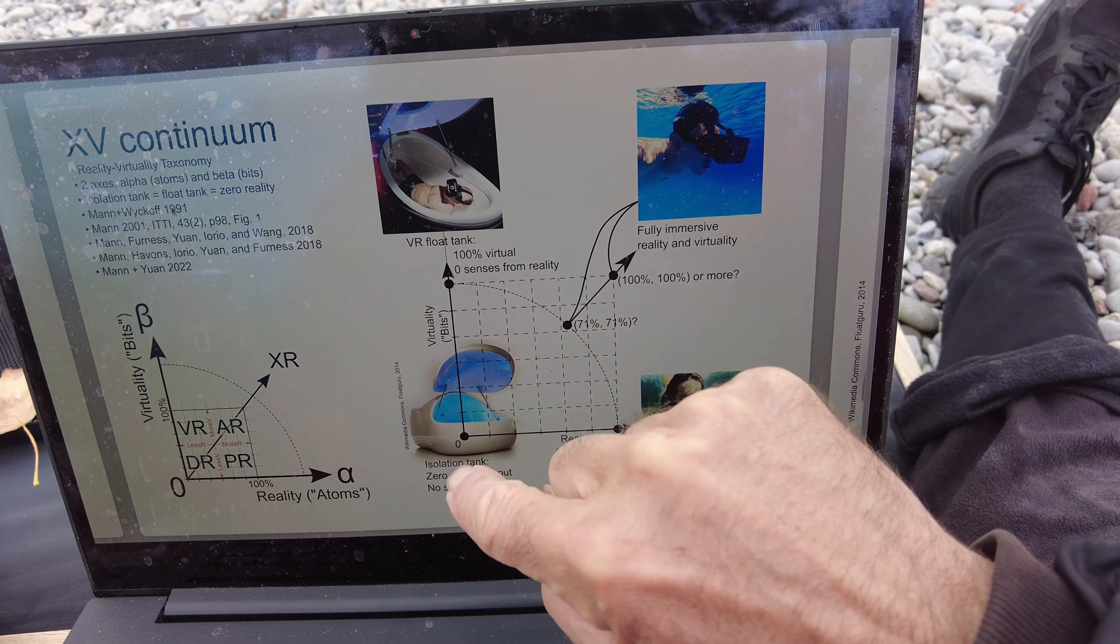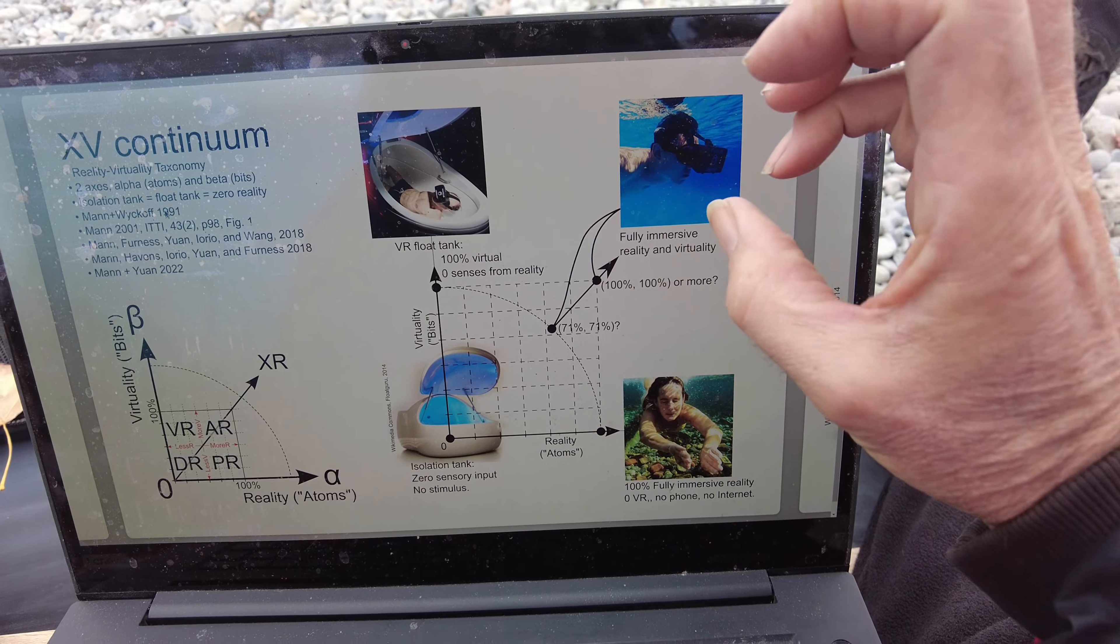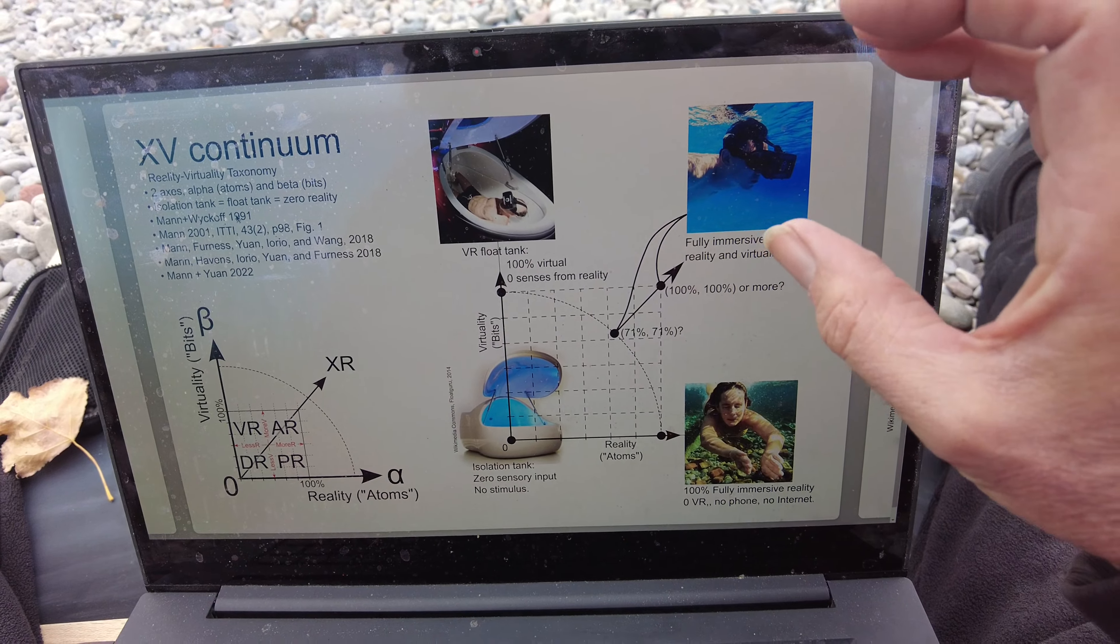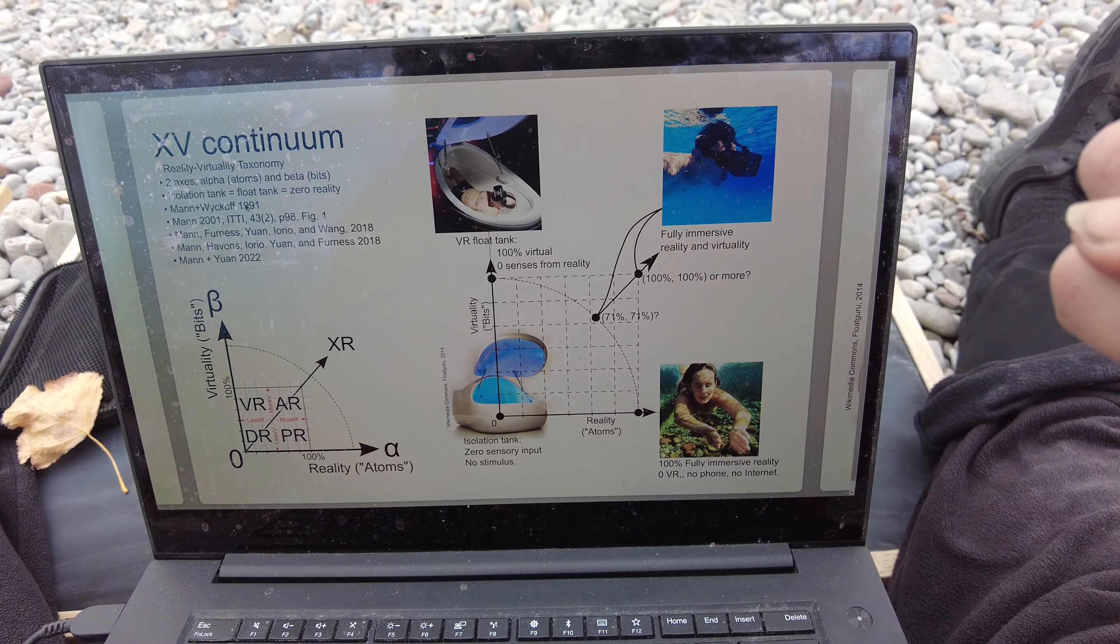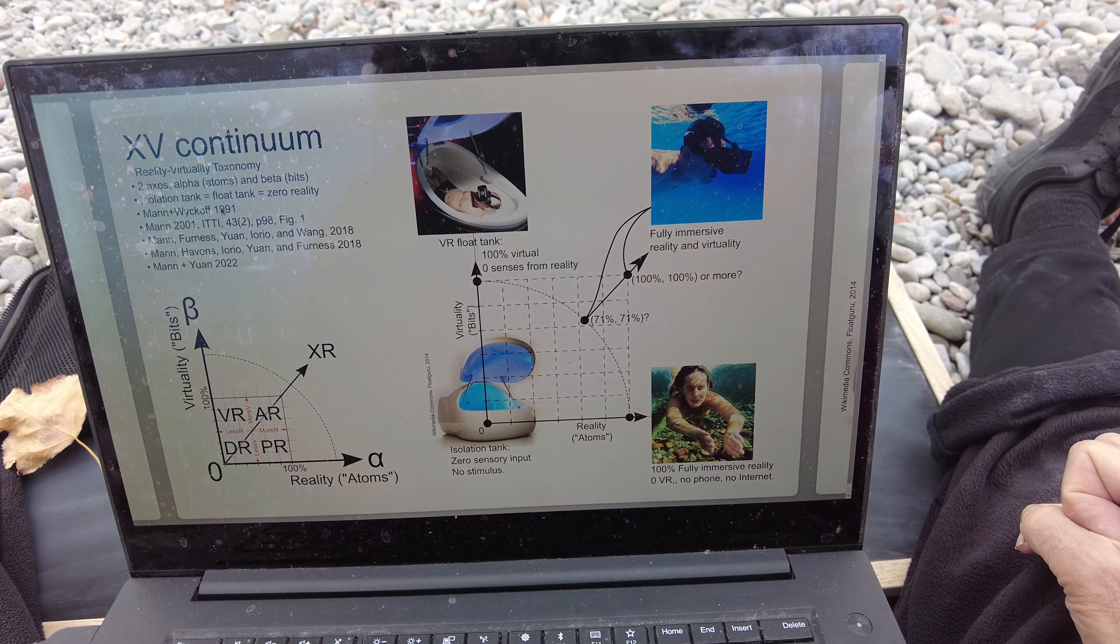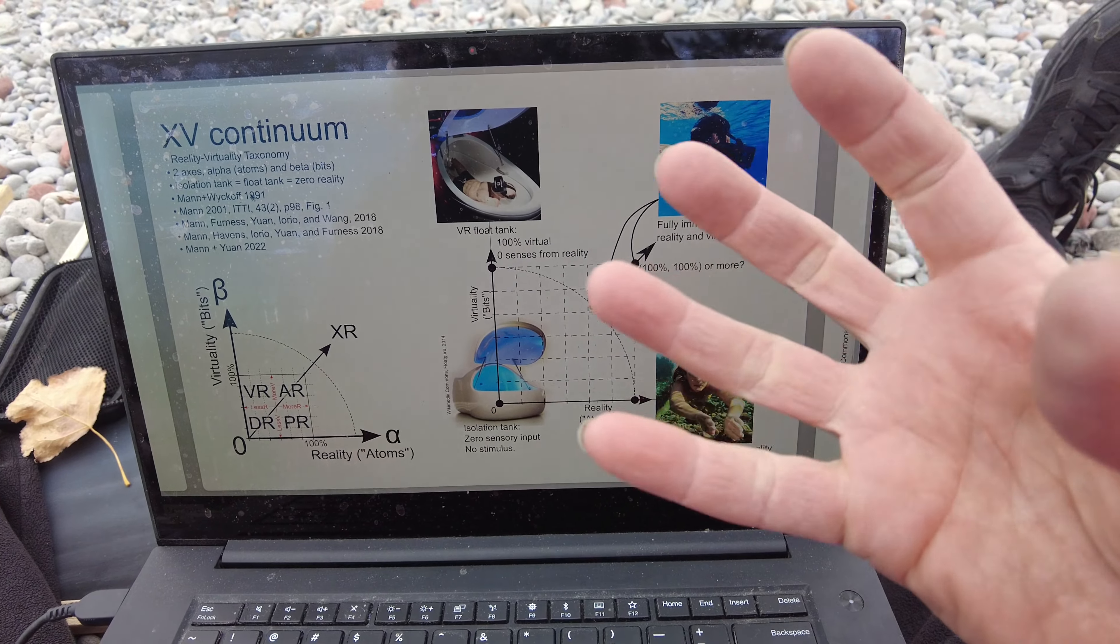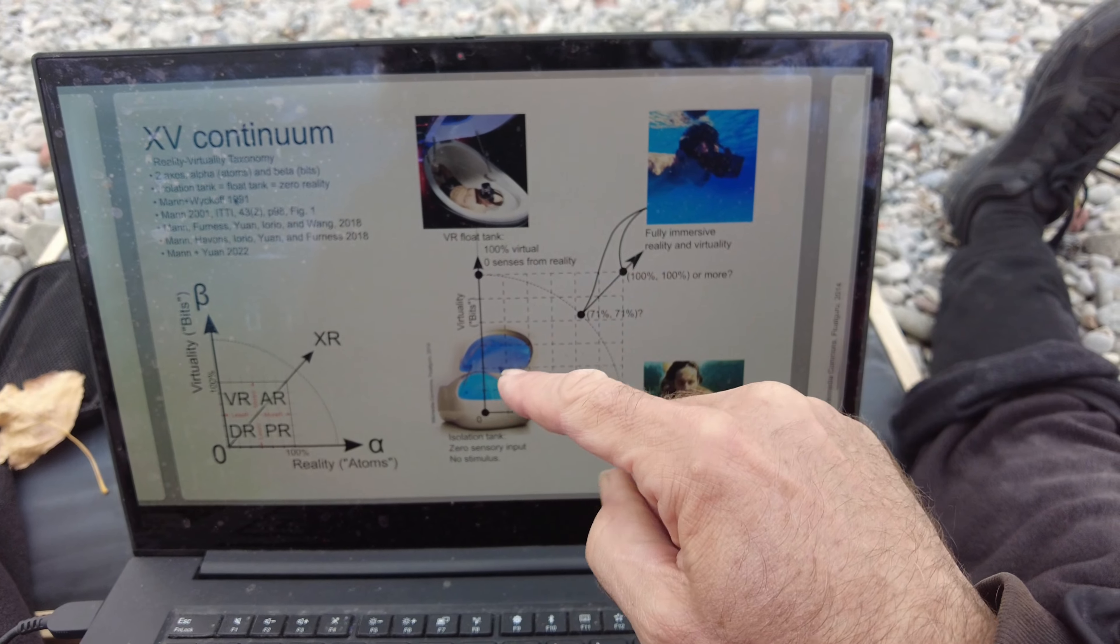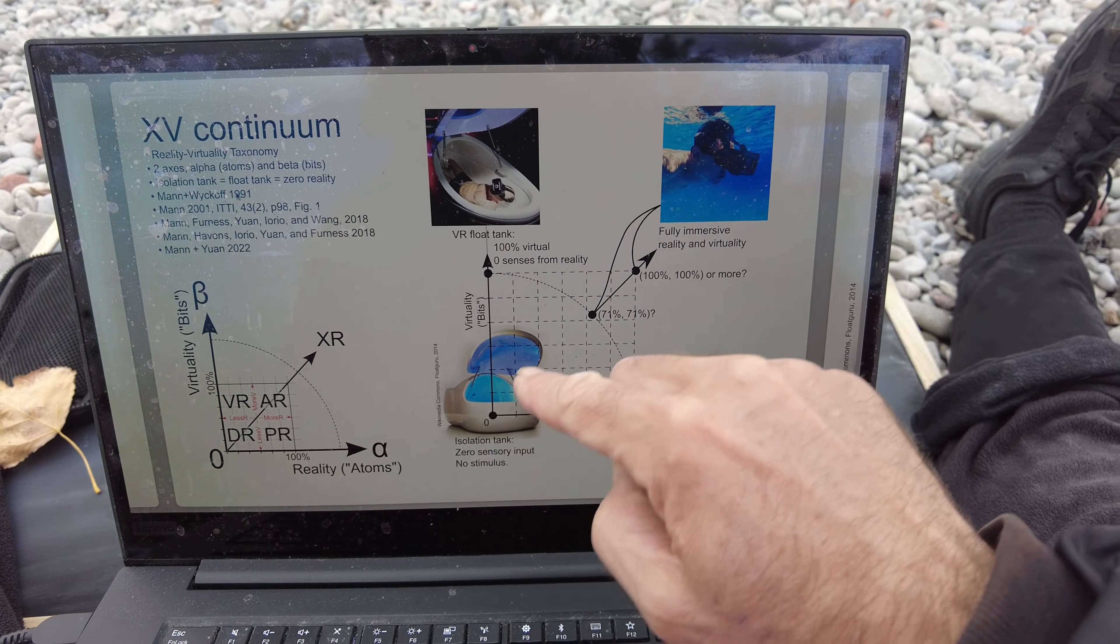But what we really are trying to do is to reach further out, to come way out on this axis. So we've got actually more than what the real world will give you, because we've got this heightened sense of awareness of the real world. When you're swimming with this thing, you're aware of all these ice fragments and you're aware of your own body. You get your heart rate down to 30 beats per minute perhaps. You get your heart rate down really low through biofeedback and so on.